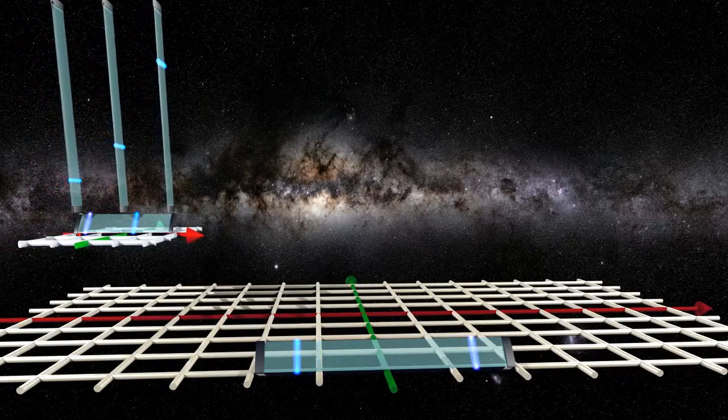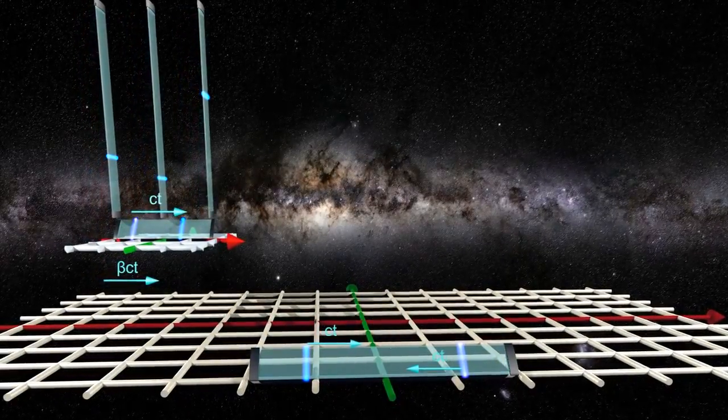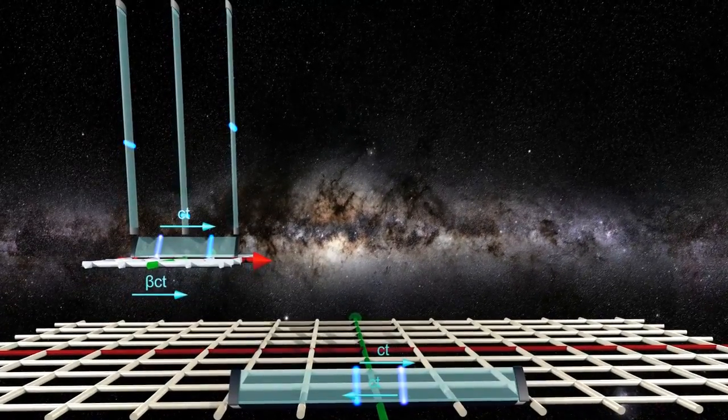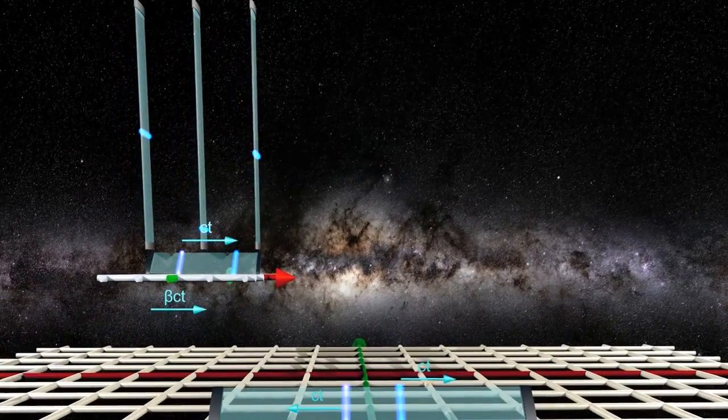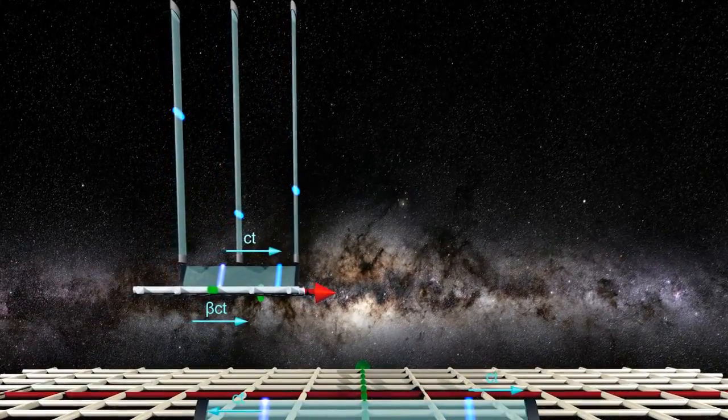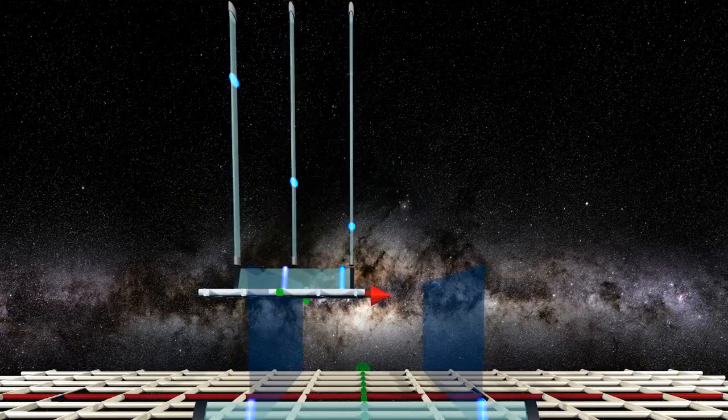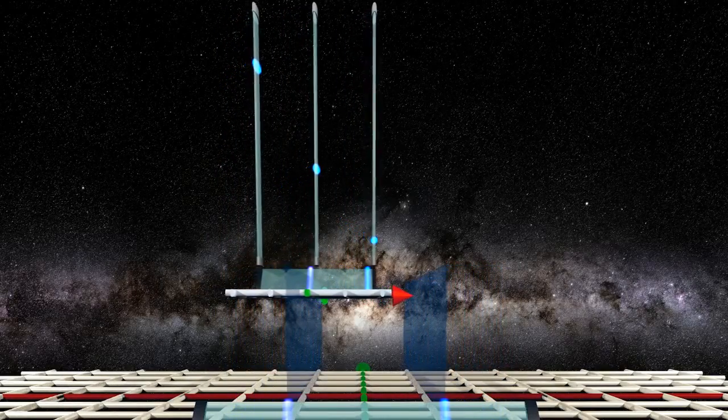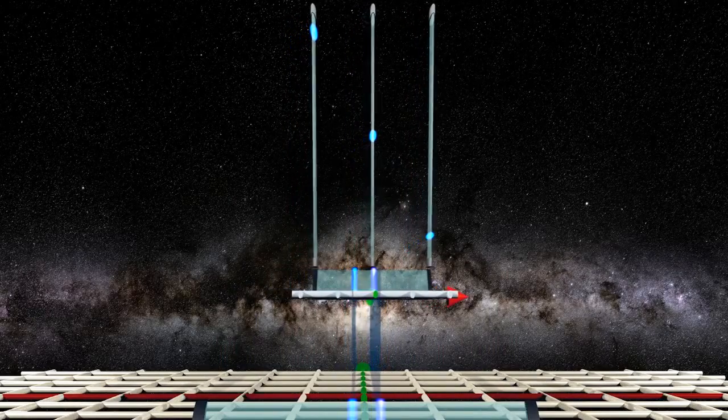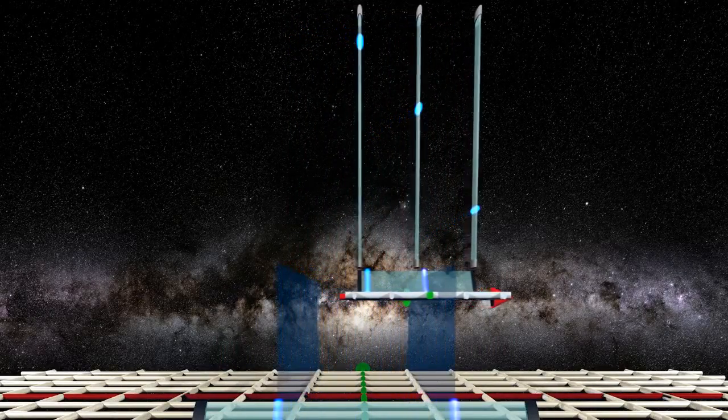Everything follows from the fact that all pulses travel at the same speed, the speed of light. Those of the stationary clock travel toward stationary mirrors. But those of the moving clock travel toward mirrors that move toward and away from them. A forward traveling pulse reaches the front mirror much slower than a backward traveling pulse reaches the rear mirror. The moving clock pulses no longer appear to reflect simultaneously.